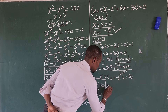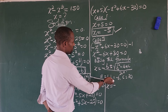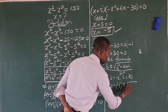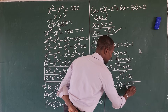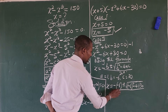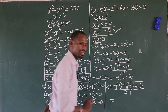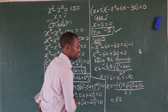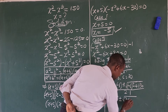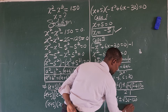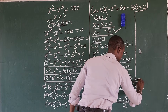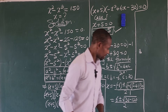So we substitute: x equals minus of (minus 6) plus or minus the square root of (minus 6) squared minus 4 times 1 times 30, all over 2 times 1. Minus times minus gives us plus 6. Then (minus 6)² gives us 36, and 4 times 30 gives us 120. So inside the square root we have 36 minus 120, which gives us minus 84. So x equals 6 plus or minus the square root of minus 84, all over 2.